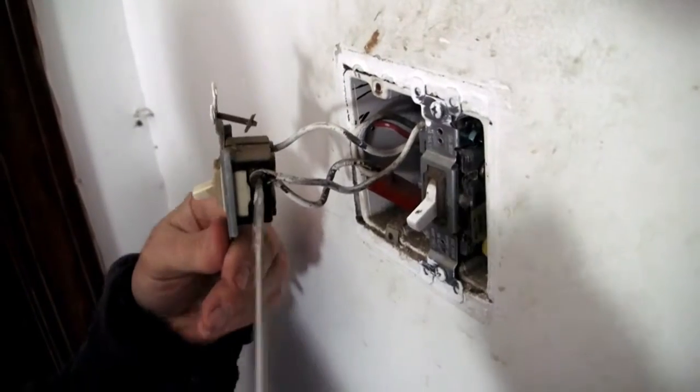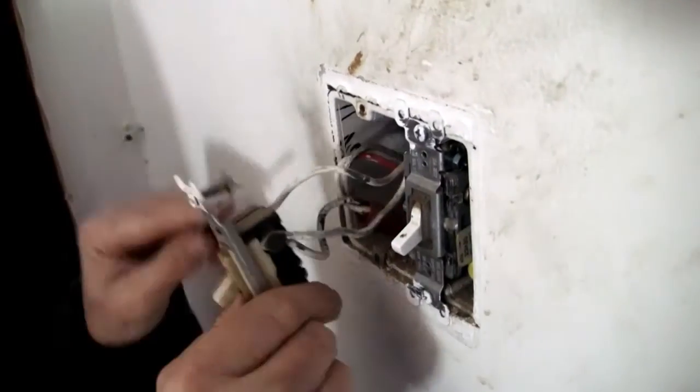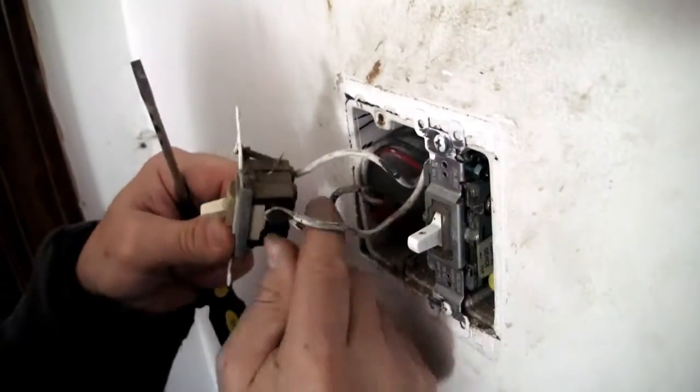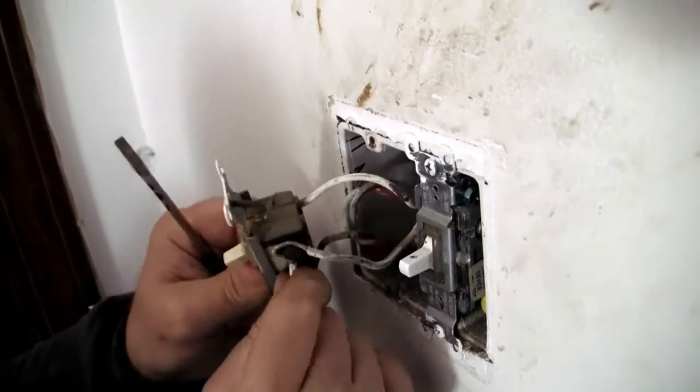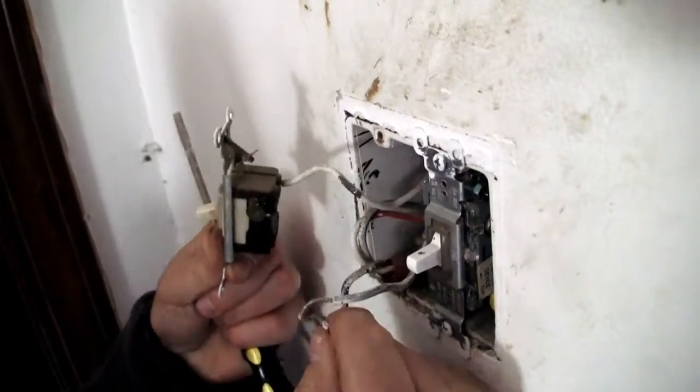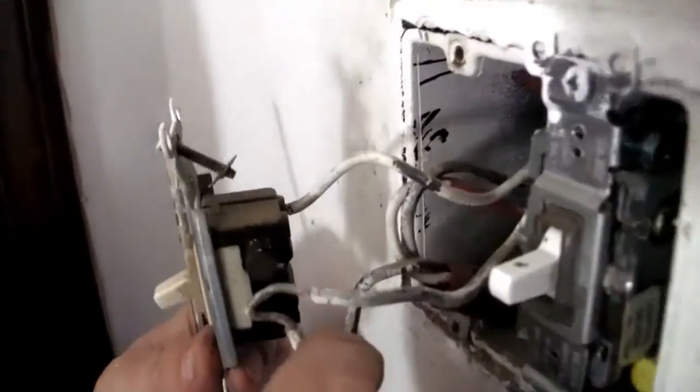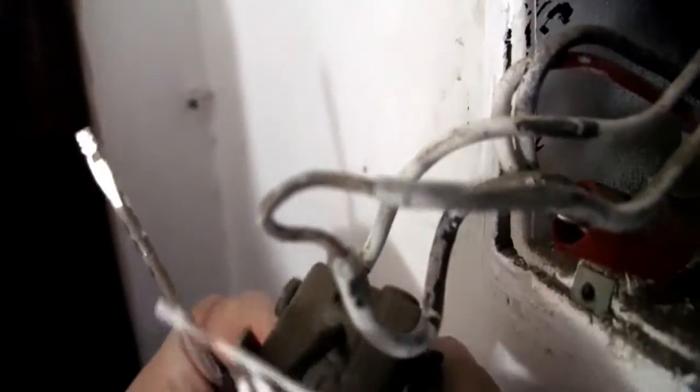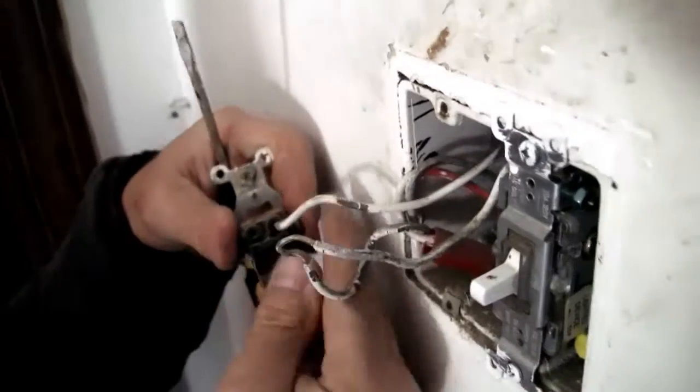So all we're going to do is loosen these two screws. We'll pop the wire off. You have to just kind of pull it apart and then that one's off. That's the one on the right. And then, they've stabbed this one into the back.